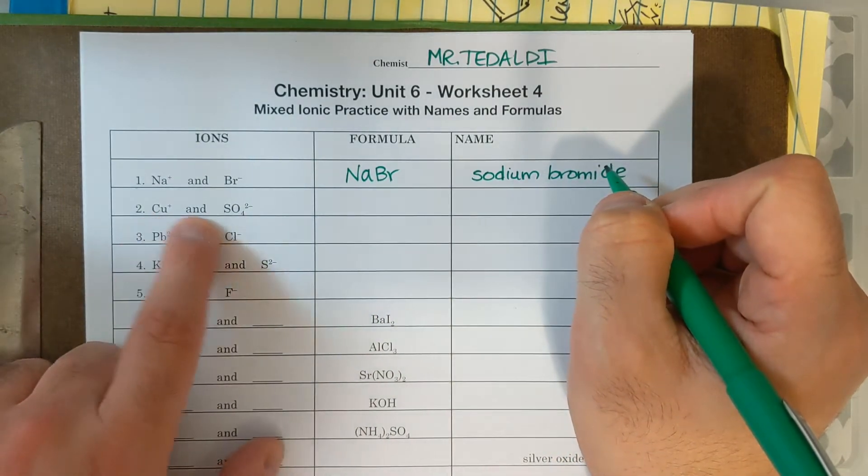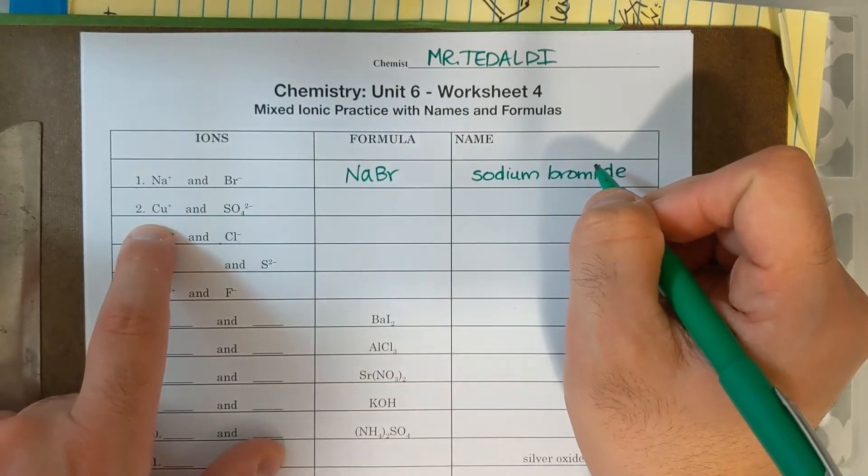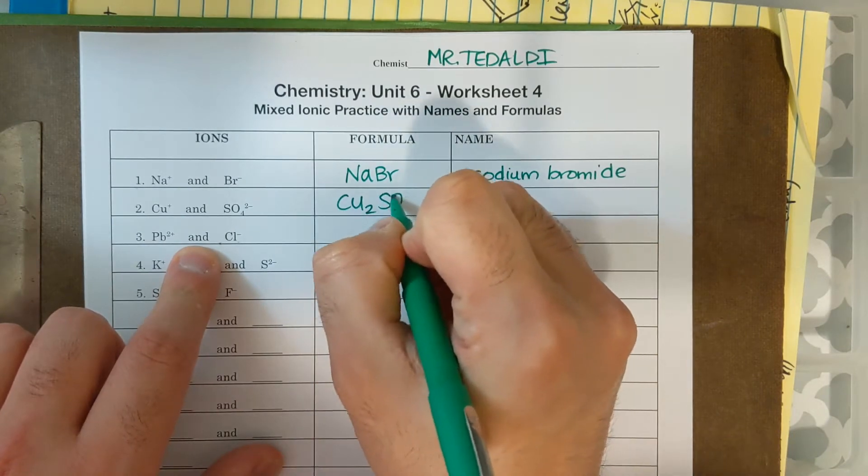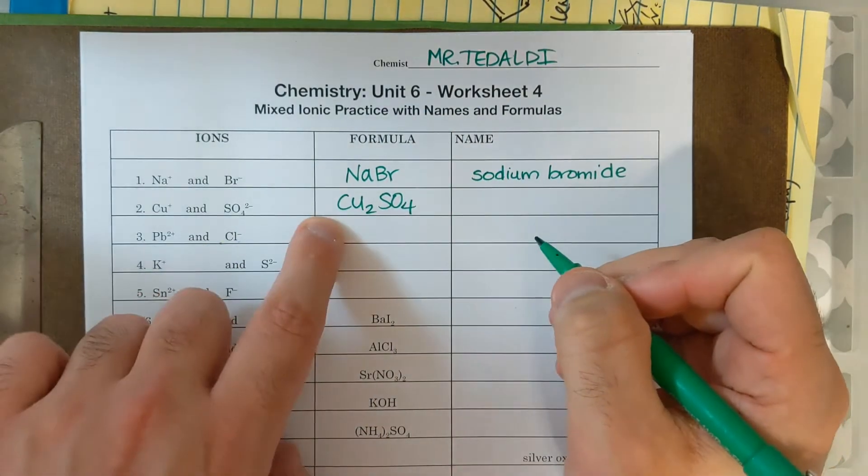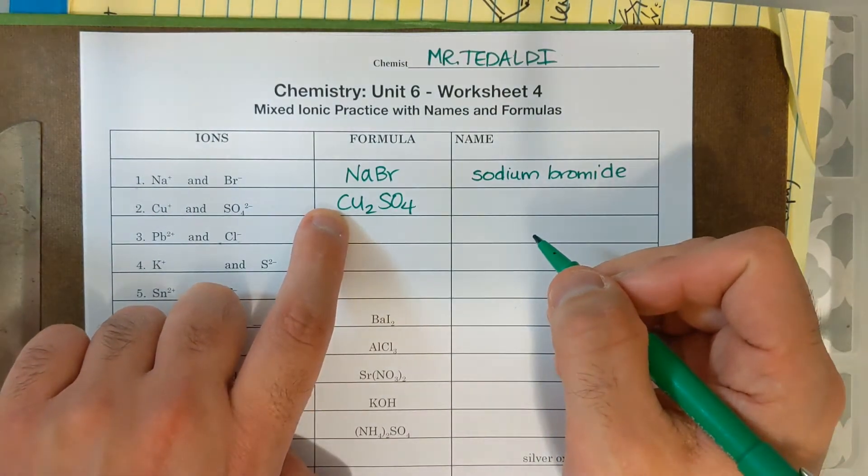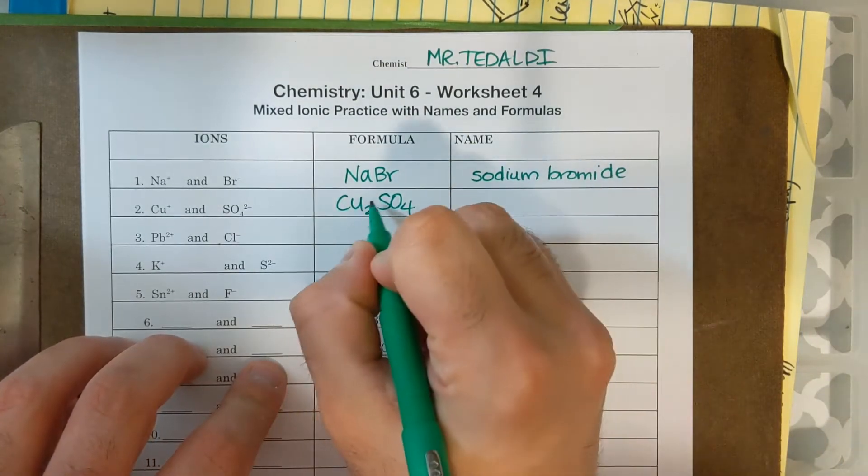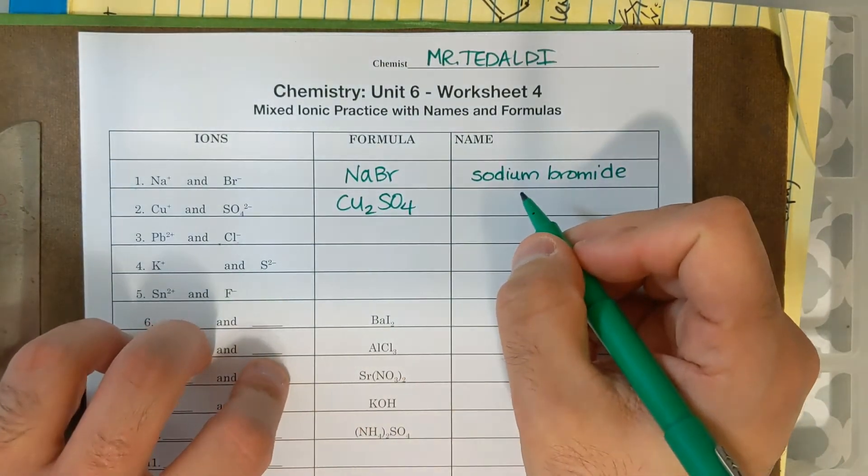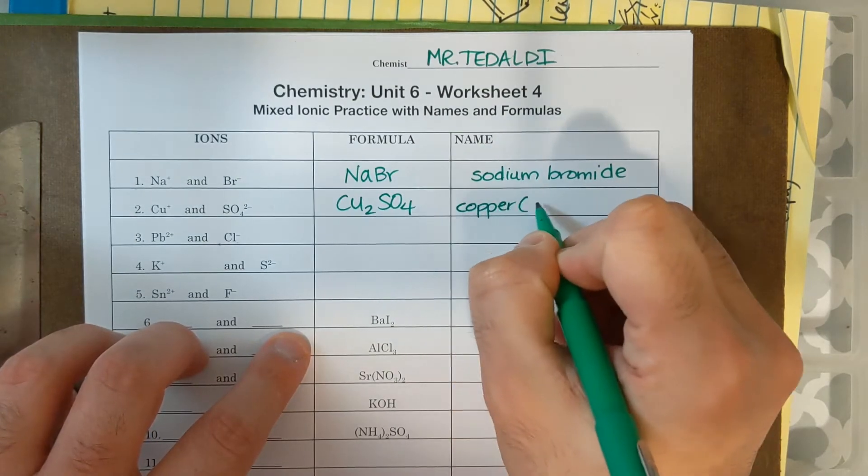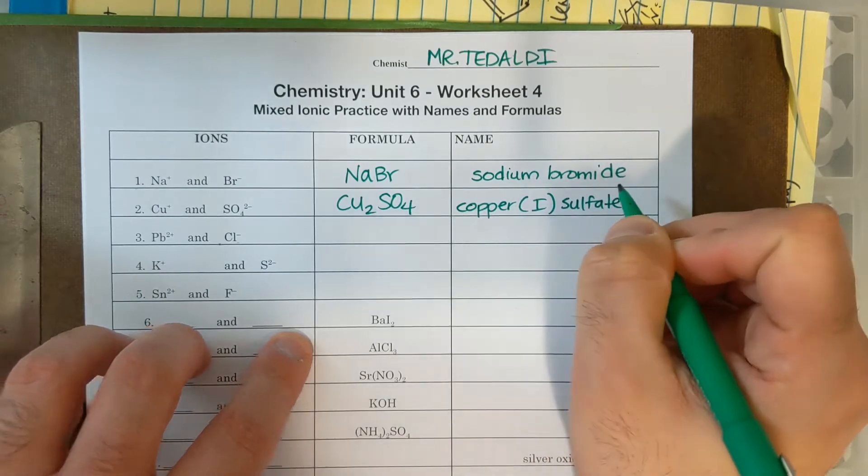Next one, I have Cu plus and SO4 2 minus. If I do the crisscross method, I'm going to need two Cu's and one SO4. So it's going to look like that. And then Copper is a transition metal, and so it needs a Roman numeral for its charge. Its charge is positive one. SO4 is a polyatomic ion. It's sulfate. So overall, this name is going to be Copper, Roman numeral one, sulfate.